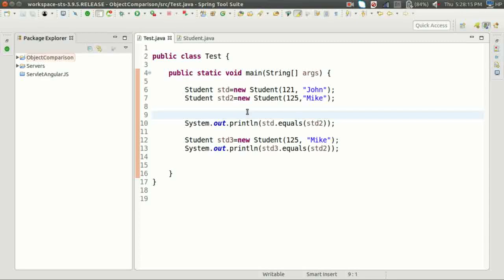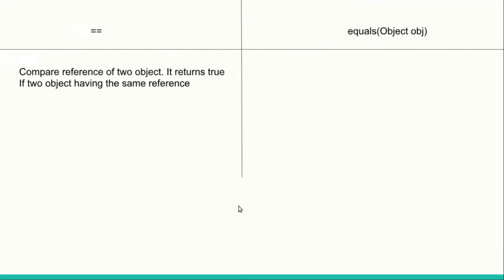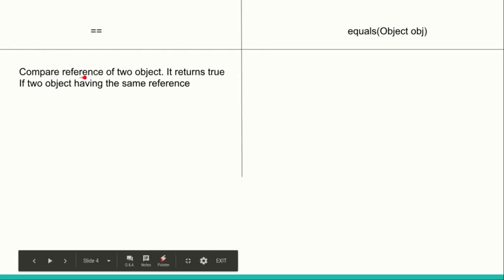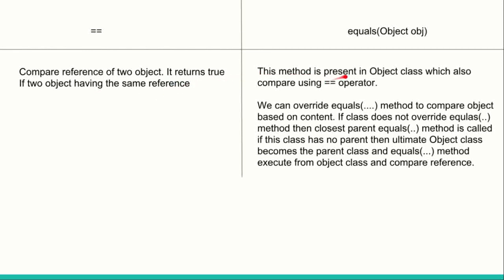All wrapper classes have overridden the equals() method and their logic compares content, not address. To summarize: == compares the references of two objects and returns true only if both have the same reference. The equals() method is defined in Object class and also uses == by default. We can override equals() to compare by content. If a class does not override equals(), the closest parent's equals() is called. If there is no parent, Object class becomes the parent and equals() compares by reference. Thank you for watching.